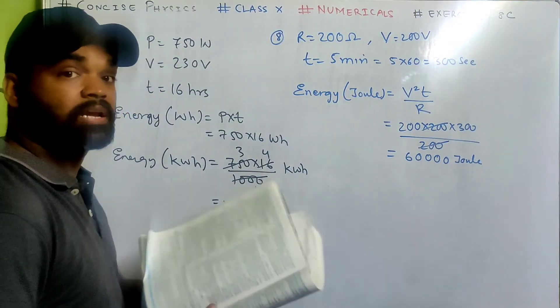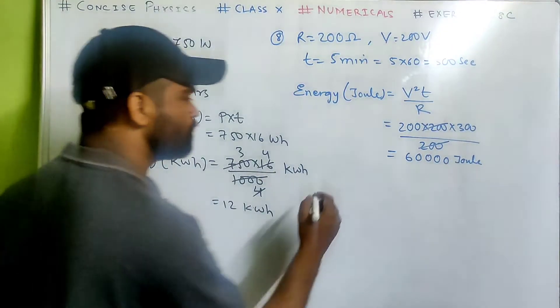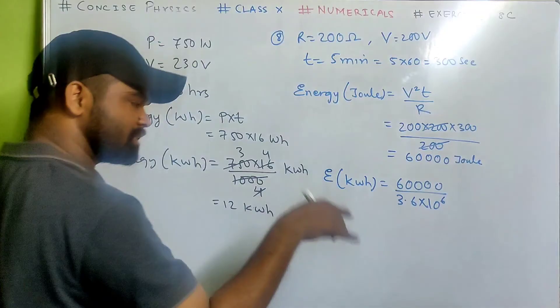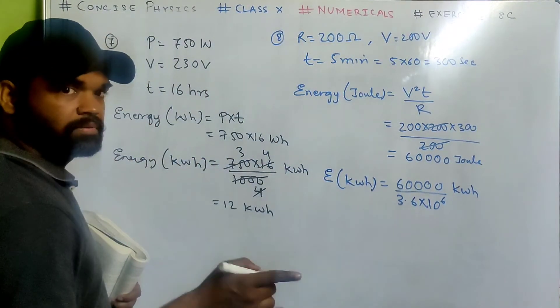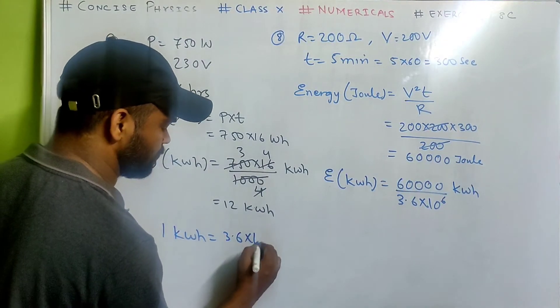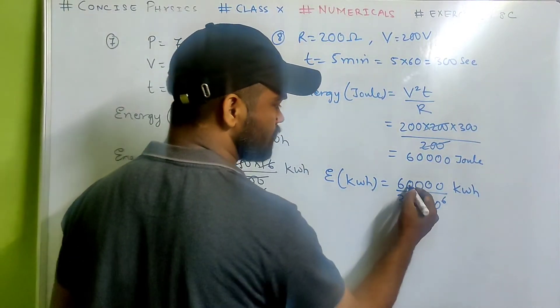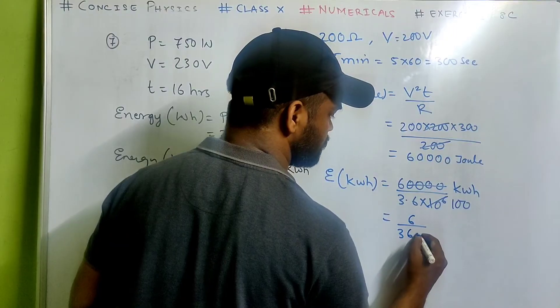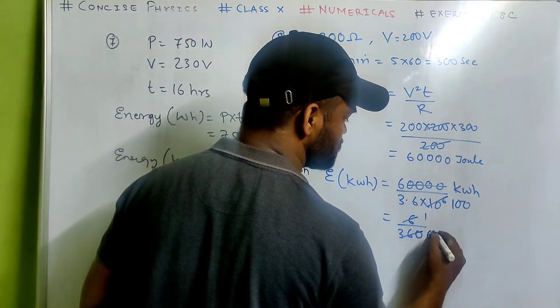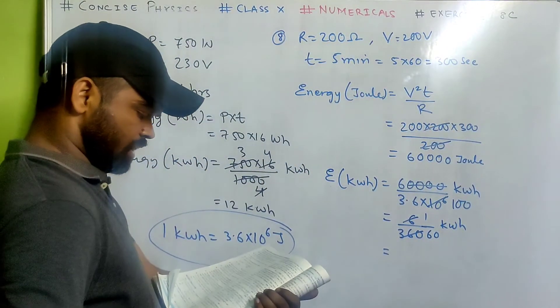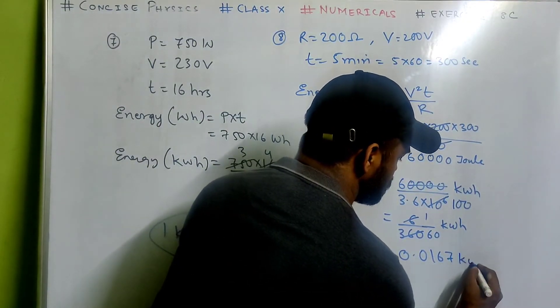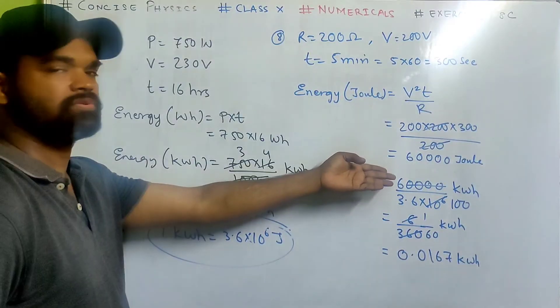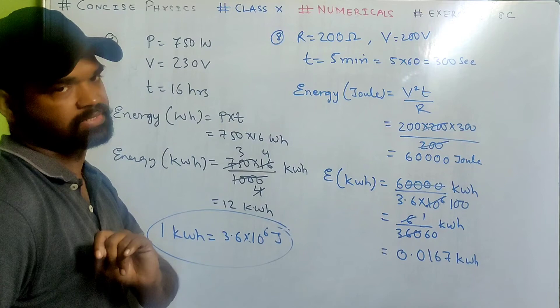Now in kilowatt hour. So how do you convert Joule to kilowatt hour? Energy in kilowatt hour, you simply divide Joule with 3.6 multiplied by 10 to the power 6. Because 1 kilowatt hour equals 3.6 multiplied by 10 to the power 6 Joule. So you solve it, that's 6 by 360, that's 1 by 60 kilowatt hour. I think they have solved it in decimal 0.0167 kilowatt hour. V square T by R we will use, convert it to Joule and then to kilowatt hour we divide by 3.6 into 10 to the power 6.